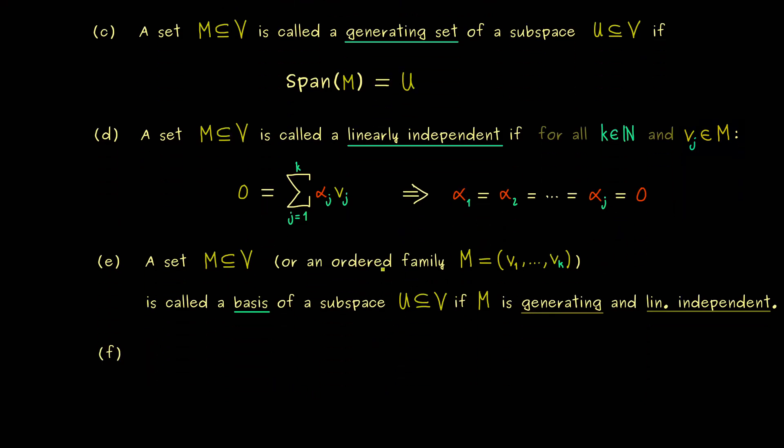Now in general for a given subspace one can choose a lot of different bases, but it turns out that the number of elements in such a basis is fixed. Therefore this well defined number for U gets a special name. And this should not be a surprise for you, this is what we call the dimension of the subspace U.